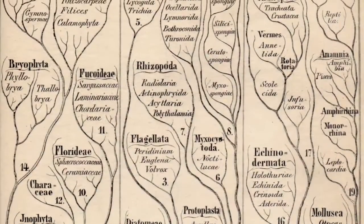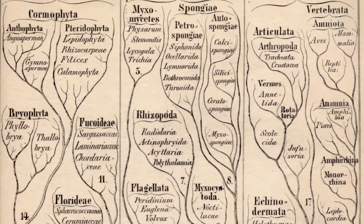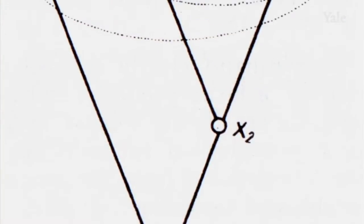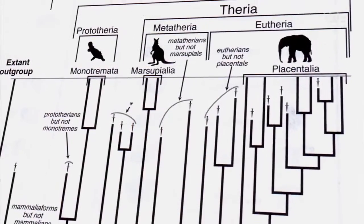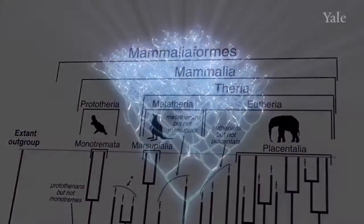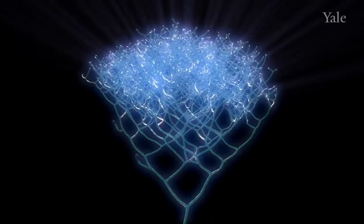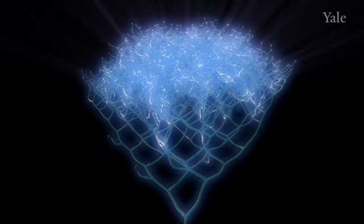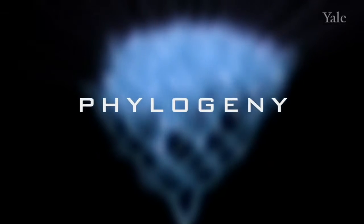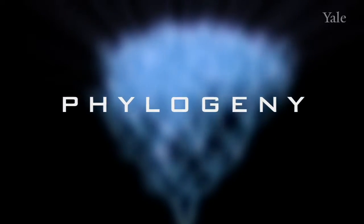Ever since Darwin, scientists have attempted to reconstruct the historical relationships among species. Today, evolutionary biologists refer to the Tree of Life as a phylogeny. Phylogeny is a history — it's a history of branching within a lineage, within a group of species.